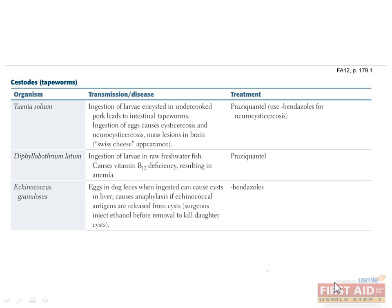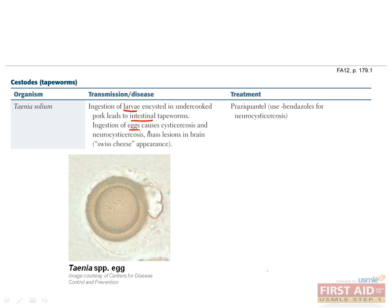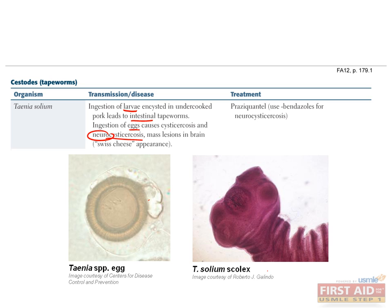The cestodes are segmented flatworms which are all transmitted by ingestion. Taenia solium, or pork tapeworm, can present as two different diseases depending on whether the egg or larval form was ingested. Ingestion of the larval form in contaminated pork leads to intestinal colonization and mild GI symptoms. Ingestion of the egg form via fecal-oral contamination leads to the more serious disease, cysticercosis, in which the egg hatches and larvae penetrate the intestines, enter the bloodstream, and affect any tissue. Neurocysticercosis is diagnosed when larvae have penetrated the brain or spinal cord. The scolex has four suckers and prominent hooks for firm intestinal attachment. Treat with praziquantel.